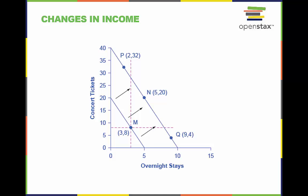Here is an example. The utility maximizing choice on the original budget constraint is N. The dashed horizontal and vertical lines extending through M allow you to see at a glance whether the quantity consumed of goods on the new budget constraint is higher or lower than on the original budget constraint.